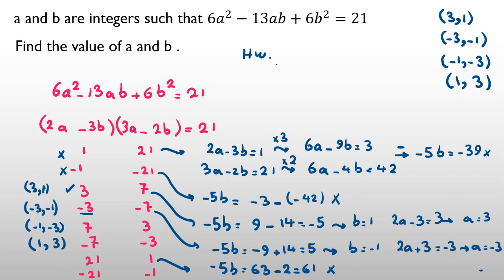As a homework problem, try solving: 12a² minus 25ab plus 12b² equals 10, where a and b are integers. Comment your answers below the video. If you want to learn other ideas, you can send a message to my WhatsApp number in the description. Thanks and bye!